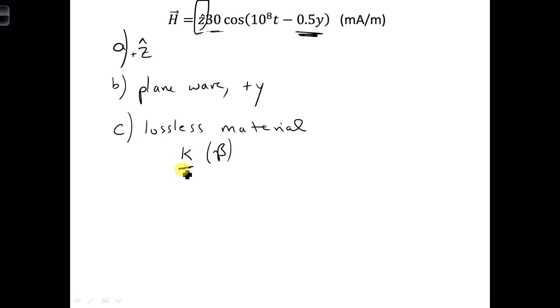So we're going to use K here. And the argument, similar to transmission lines, omega T minus K Y. So we can identify omega, and we can also identify K.